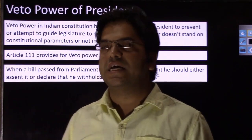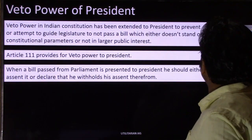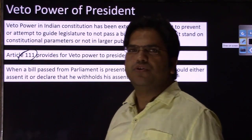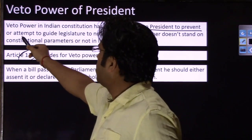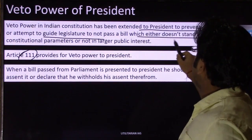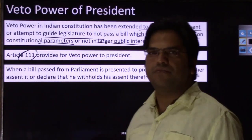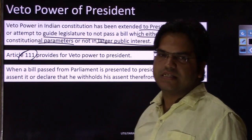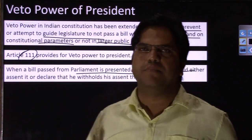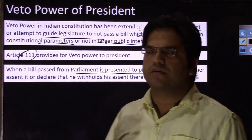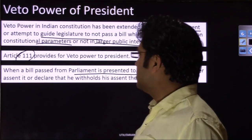Veto power has been mentioned in the Constitution of India — Article 111 deals with veto powers of the president. Veto power has been extended to the president to prevent or guide the legislature not to pass a bill which either does not stand on constitutional parameters or is not in larger public interest. When a bill is passed from parliament and presented to the president, he can either assent it, withhold his assent, or resend it to parliament for reconsideration.